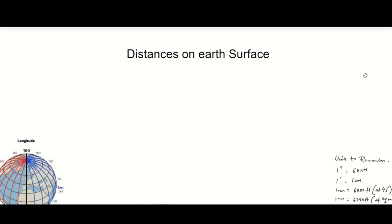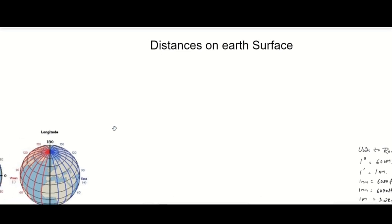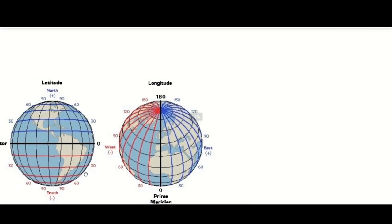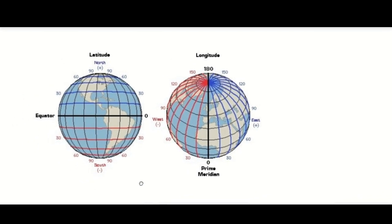Today we have to learn about distances on Earth's surface. When we start discussing distances on Earth's surface, we have to understand longitude and latitude. If we see here, this is Earth — one is the meridian side and another is the prime meridian side. If we have to calculate distances from any position A to position B, basically if we are flying from South America all the way to North America, there is a change in longitude and latitude.